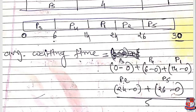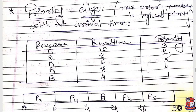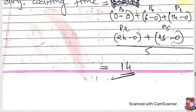We calculate turnaround time for all processes by adding waiting time and burst time from the table, then divide by the number of processes to get the average turnaround time for the max priority algorithm. For the min priority algorithm, if the question states min priority number equals highest priority, we consider the smallest priority number first. So P5 with priority value 1 is first, then P2, then P1, then P4, and finally P3.